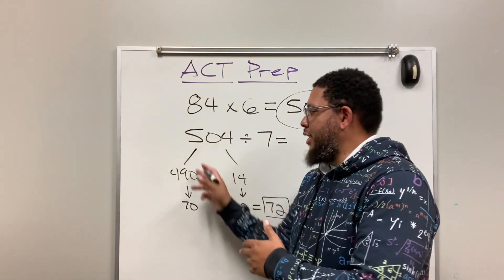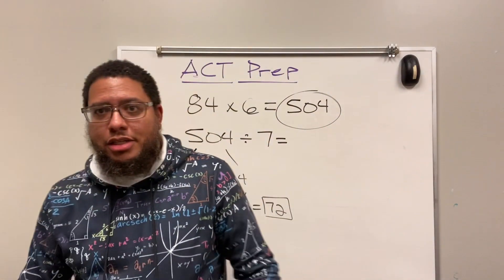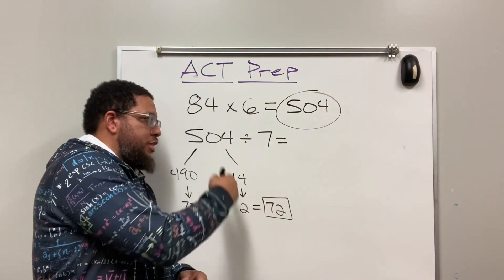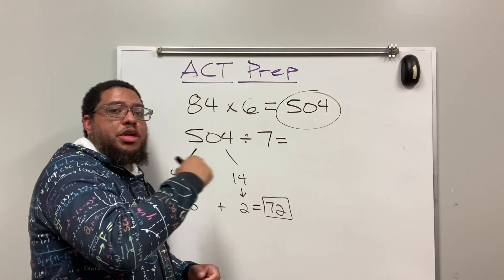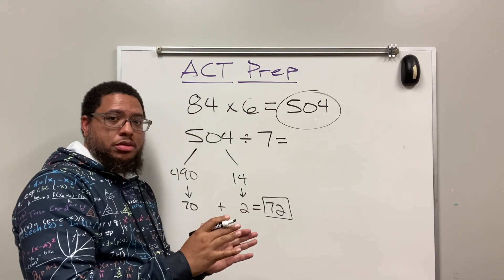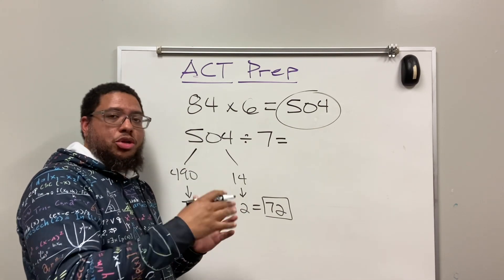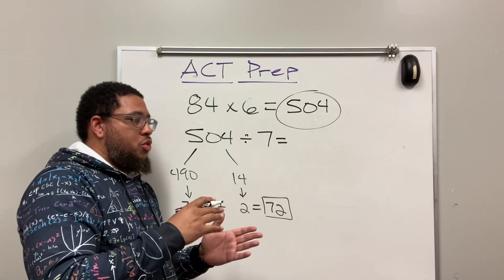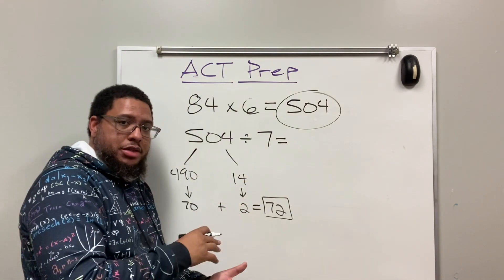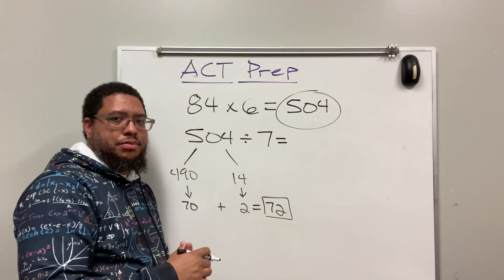This partial quotients method is what's being taught in elementary schools now, and people complain saying it's 'new math.' But if more of us had learned this method when we were younger, we would have been better at math. Every time we complain about new math, we're actually hindering our children by planting a seed that there's a problem with it and that they shouldn't want to learn it. We shouldn't limit our children's opportunity to learn more advanced math and different methods of approaching problems.